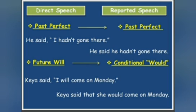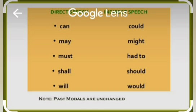For future tense with 'will,' it will change to 'would.' Like, 'Kia said, I will come on Monday.' Indirect: 'Kia said that she would come on Monday.' Next, we have modal auxiliaries. If modal auxiliary verbs are used in direct speech, they will change when converting to indirect: 'can' changes to 'could,' 'may' to 'might,' 'must' to 'had to,' 'shall' to 'should,' and 'will' to 'would.' However, if the modal verbs are already in the past in direct speech, there will be no change.